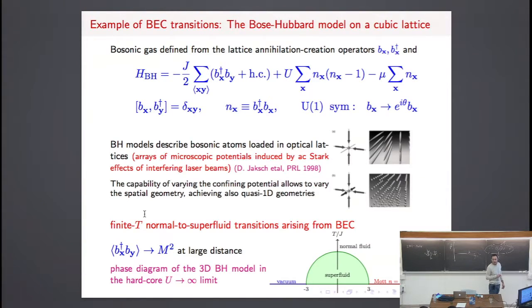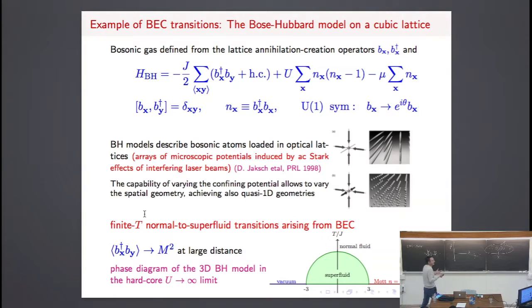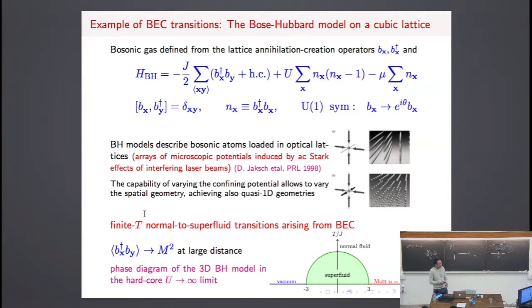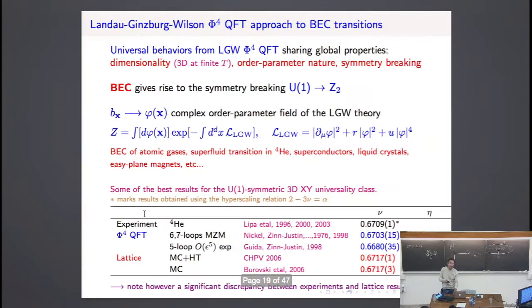This is the chemical potential. This is called the Bose-Hubbard model — the Hubbard model is the analogous model but with fermions. In this case we observe finite-temperature transitions related to the formation of a Bose-Einstein condensate. In the hard-core limit we have this phase diagram — changing the parameters we have a line of transitions. All these transitions have the same asymptotic behavior, associated with the XY universality class, which is the universality class associated with the U(1) symmetry.